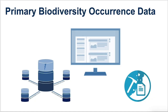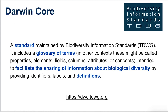We're supposed to cover primary biodiversity occurrence data in this talk, and we should probably be sure that we're talking about the same things. A good way to do that is to use the definitions that are standard in the community for sharing data — those given in the Darwin Core Standard, which is managed by Biodiversity Information Standards, TDWG. Darwin Core is more or less a glossary of terms and their definitions that facilitate the sharing of information about biological diversity, and those definitions are well-known and understood across the community.